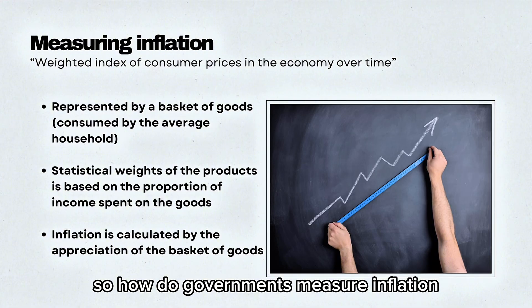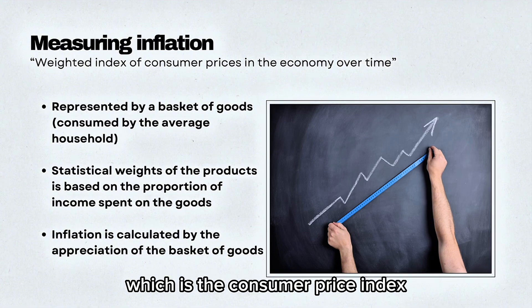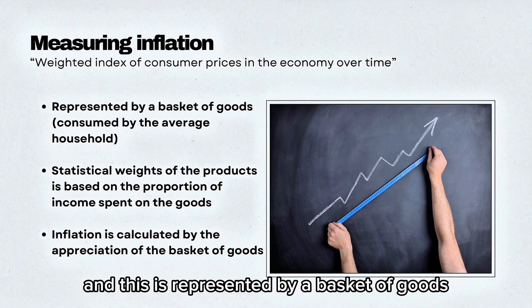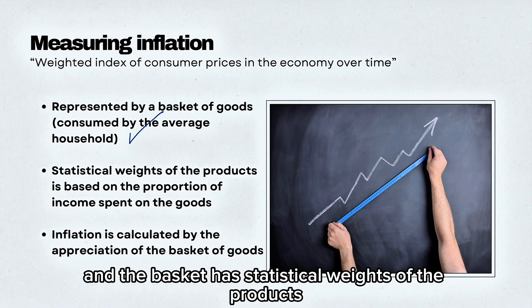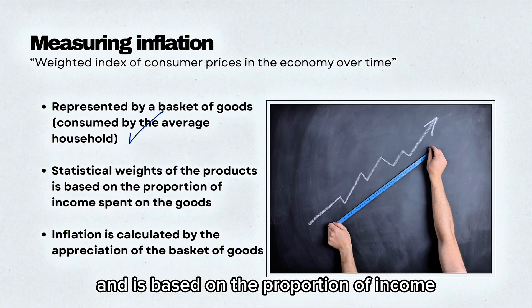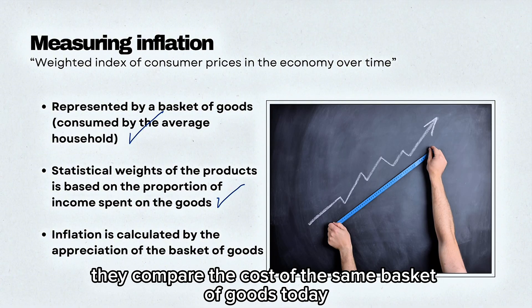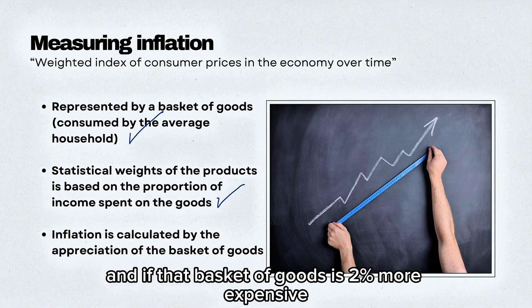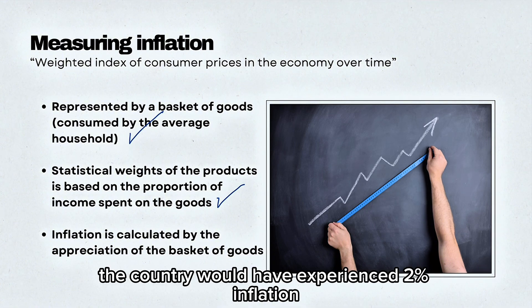So how do governments measure inflation? They measure it using the CPI, the consumer price index. This is represented by a basket of goods which is consumed by the average household. The basket has statistical weights of the products based on the proportion of income spent on those goods. To measure inflation, they compare the cost of the same basket of goods today compared to last year. If that basket is 2% more expensive, the country would have experienced 2% inflation.